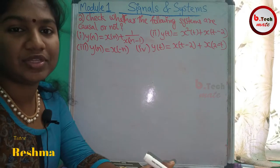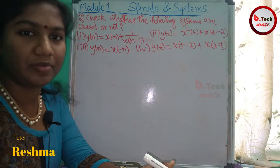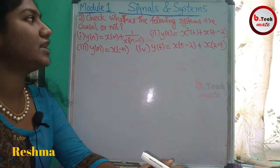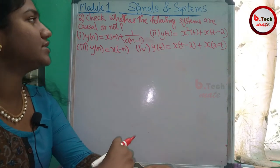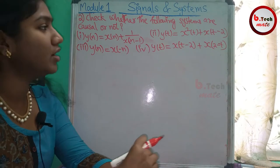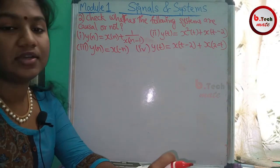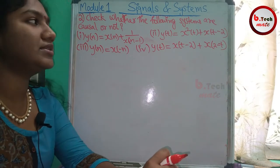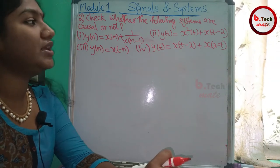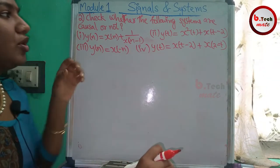Next, we will check the causal value of the problem. The problem is: check whether the following systems are causal or not. We have 4 systems — 2 continuous time systems and 2 discrete time systems. Let's check the causal value.